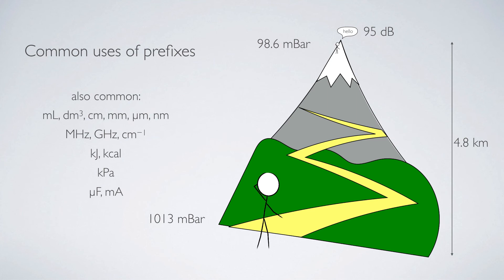We use megahertz when we talk about frequency and wave numbers when we talk about infrared. Kilojoules, kilocalories, both measures of energy, one perhaps slightly more British and correct than the other.